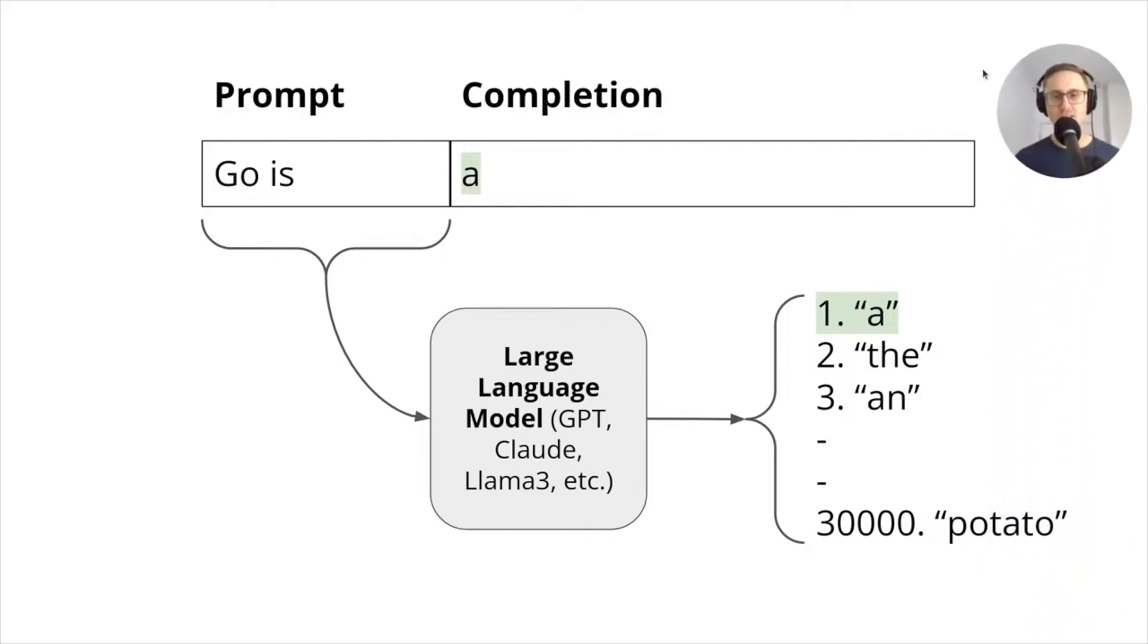The model is taking those first two words, 'Go is,' and it's computing a probability for every other word or token or subword that it knows about, and then it's looking at the most probable of those and adding that as its first token or word in the completion.